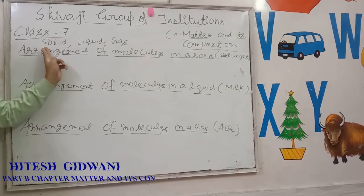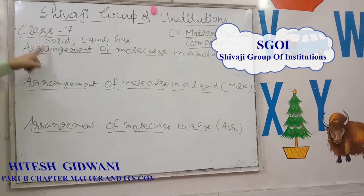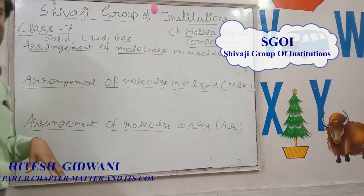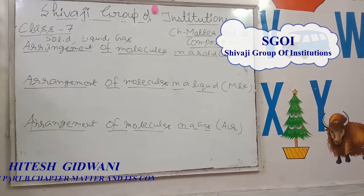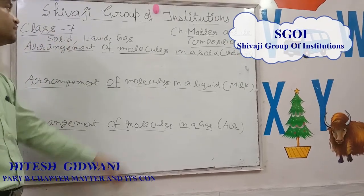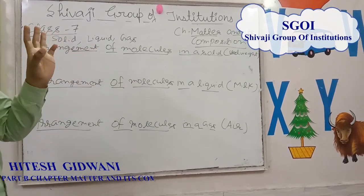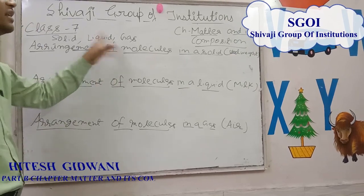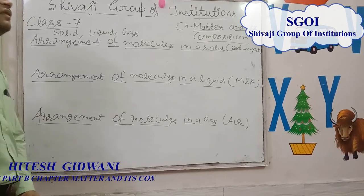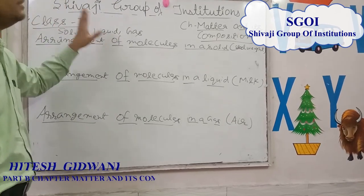There are three states of matter: solid, liquid, and gas. In solid, there is a definite shape and definite volume, and it has any number of free surfaces. In case of liquid, liquids have a definite volume but not a definite shape. Liquids have only one free surface.